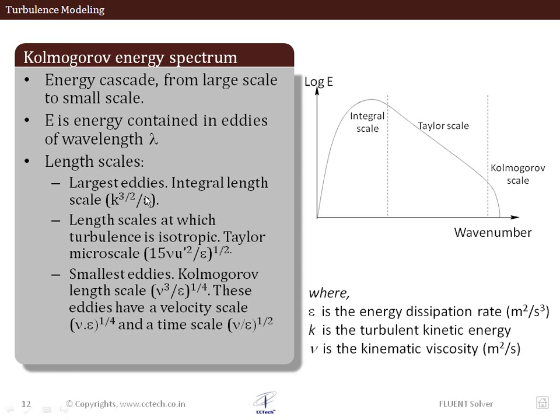We have energy cascade from large scale to smaller scales. The large scale is where the wave number of the eddies, the inverse of the wavelength or length scale, is smaller. When the wave number is smaller we say it's an integral scale characteristic of the large eddies. In between there is the Taylor microscale, where turbulence is more or less isotropic. This is encountered in highly turbulent flow.